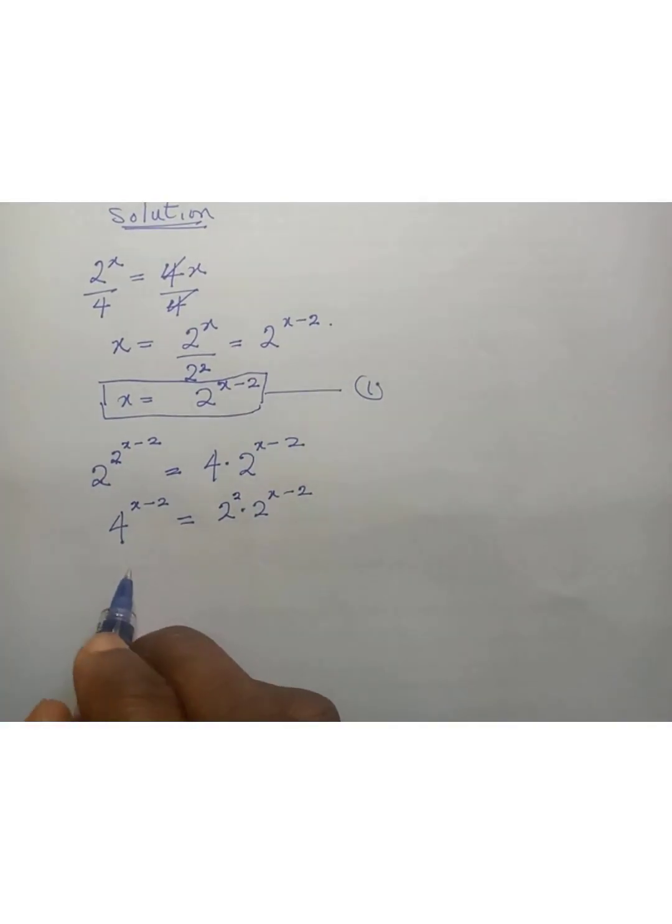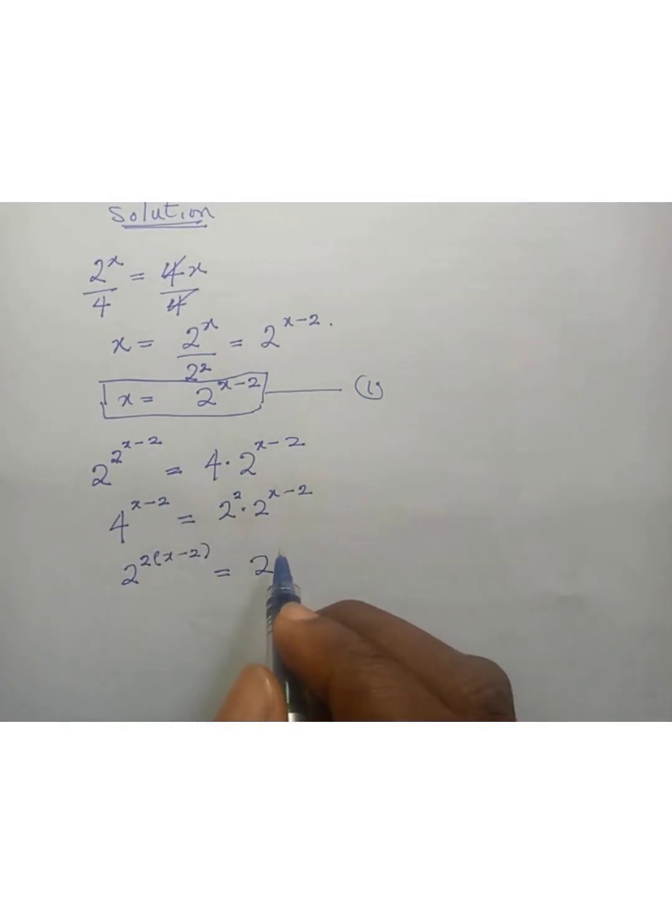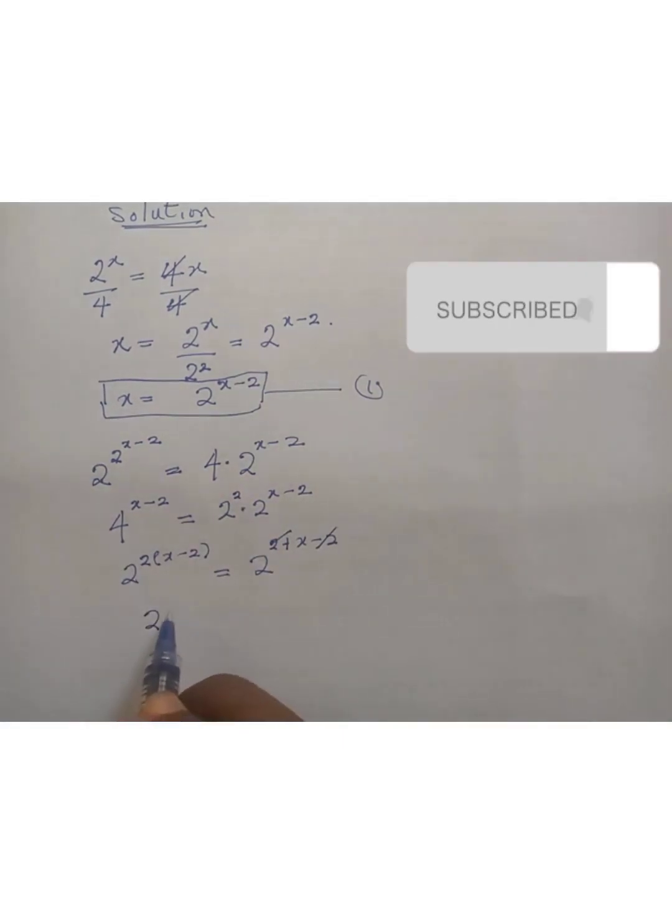But 4 can also be written as 2^2, times 2^(x-2). Adding the exponents: 2 + (x-2), these 2 and -2 eliminate. We have 2^(2(x-2)) = 2^x. We have the same base on both sides.